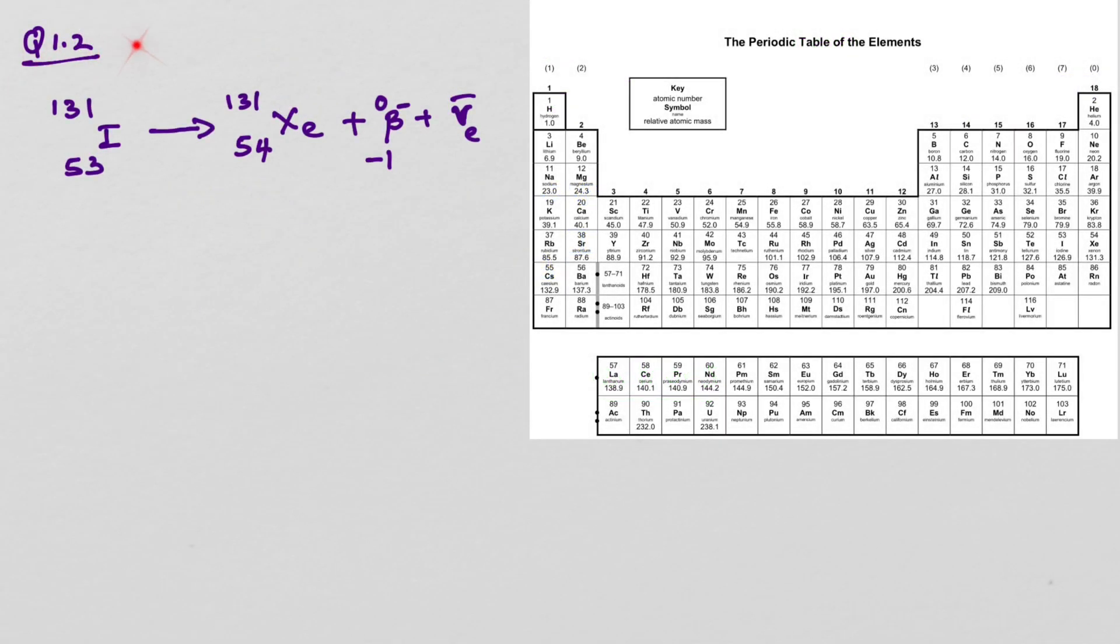Question 1.2. The isotope iodine-131 undergoes beta minus decay. And this is the equation for it. The question is asking us to state the nuclear number of the xenon nuclide. What is the xenon nuclide formed? The nuclear number is 131. If you look in the periodic table, it's also 131. So it's 131.